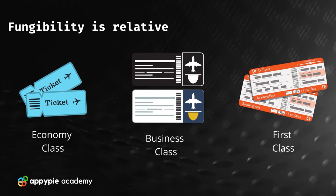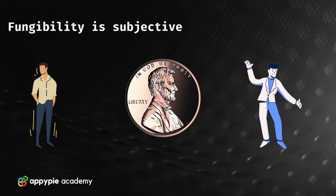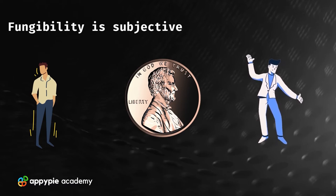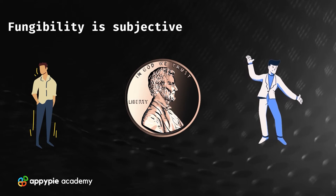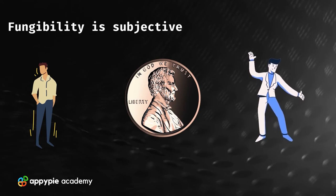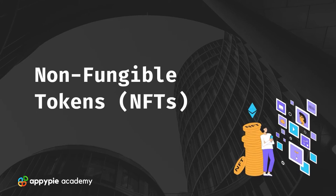We can also realize fungibility to be relative or subjective. When we compare fungibility across multiple things, we can find it to be relative. For example, take economy class, business class, and first class flight tickets — each ticket is roughly fungible within its class, but you can't fairly swap a first class ticket for a business class ticket. Interestingly, fungibility can also be subjective: a rare penny might be worth a single cent to you, but worth much more to a coin collector. Thus fungibility can be subjective.